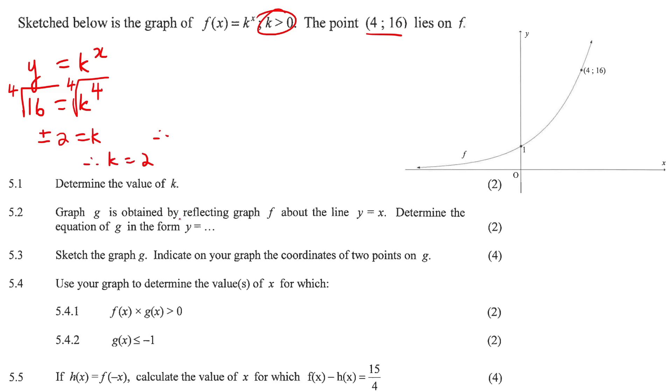Graph g is obtained when you reflect graph f along the line y equals x, which is this line here. That's actually the inverse line. That's what inverses are - they are reflections across the line y equals x. When they say reflecting a graph along that line, that means inverse. Determine the new equation.